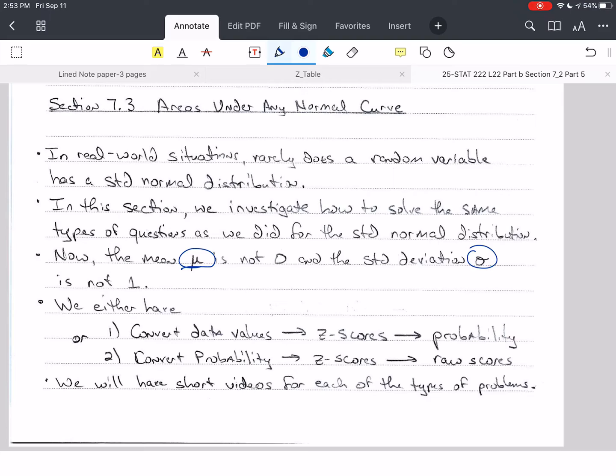So in this section, what we're going to do is we're going to convert data values, this is raw scores or x values, to z scores in order to find a probability. The second thing we're going to do is we're going to take the probability that we're given and convert that to a z score. We're going to find the z score associated with that.